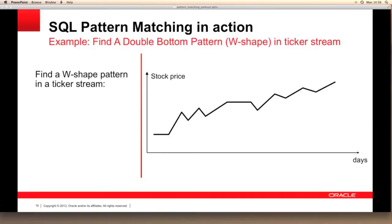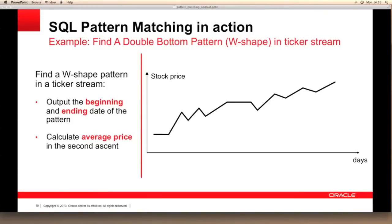Once we've found a W-shaped pattern, we want to return the start date and the end date for the pattern. We want to calculate the average price during the second up leg of our W-shape, but we're only looking for W-shaped patterns that lasted less than seven days. Of course we can search across multiple ticker symbols within our data set, but in the following slides we'll limit the data set to a single ticker stream to keep things simple.